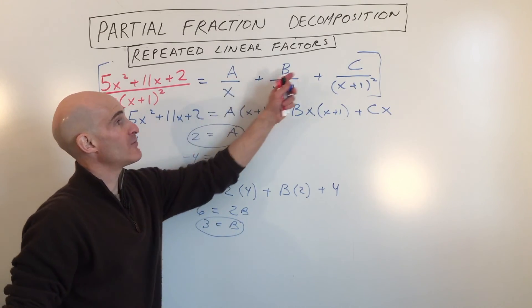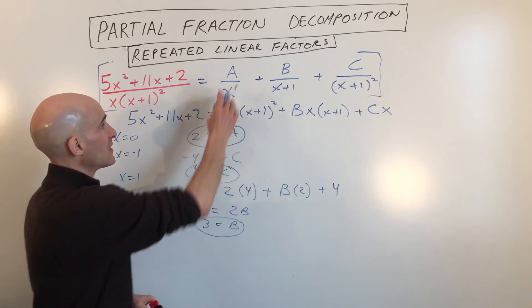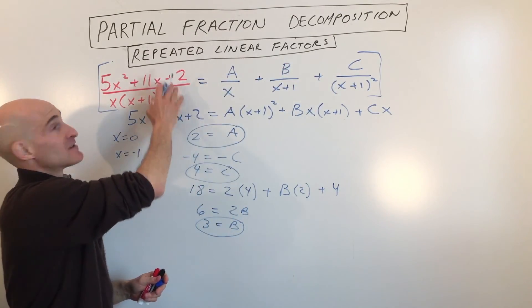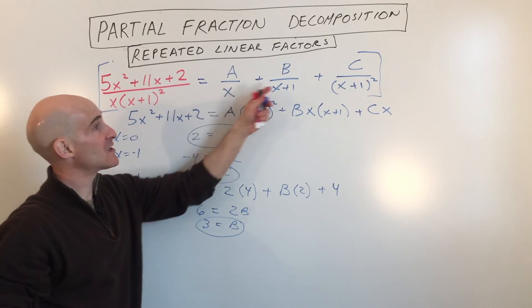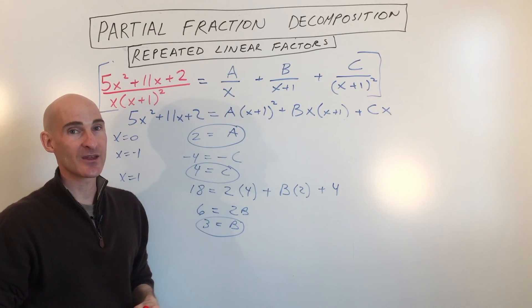Now we know A, B, and C. And if we go ahead and put these back in, you can see that these would be your original fractions before you combine them together to get this fraction here. So we decompose it, we broke it down into the original fractions prior to adding them together.